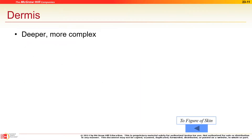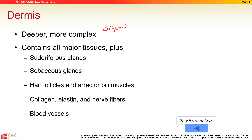The dermis is the second layer, a bit deeper and more complex, because that's where all the accessory organs of the skin are. We have sweat glands — two types: the stinky sweat and the watery sweat.